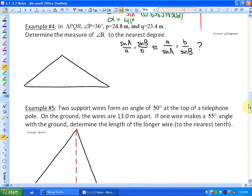Example number four says in triangle PQR, angle P is 36 degrees, side P is 24.8 meters, side Q is 23.4 meters, and determine the measure of angle R to the nearest degree. I'm going to start labeling the triangle. Angle P is 36 degrees, and you want to draw these somewhat to scale so you can see if your answer looks accurate. Side P, which is opposite angle P, would be 24.8 meters, and side Q, which is opposite angle Q, is 23.4 meters. What we're looking for is the measure of angle R.